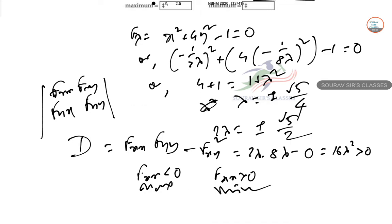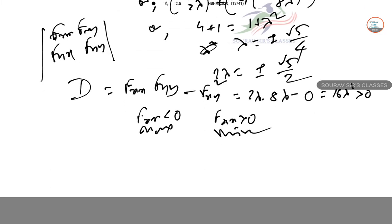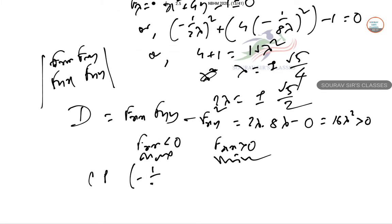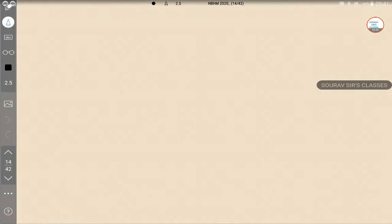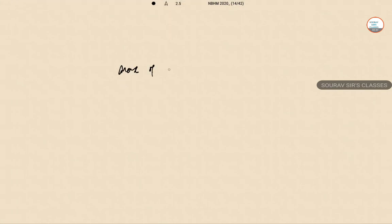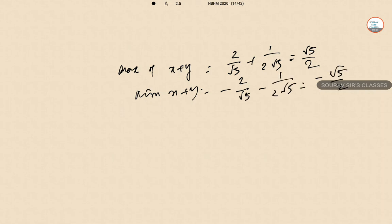So these are the critical points. The maximum of x plus y equals square root of 5 over 2, and the minimum of x plus y is minus square root of 5 over 2.